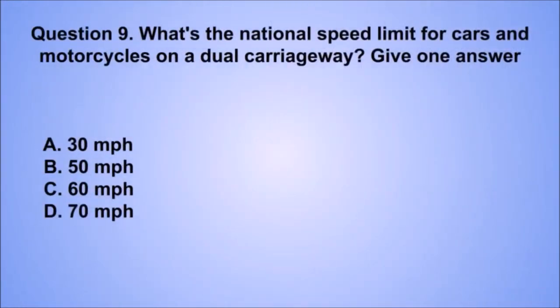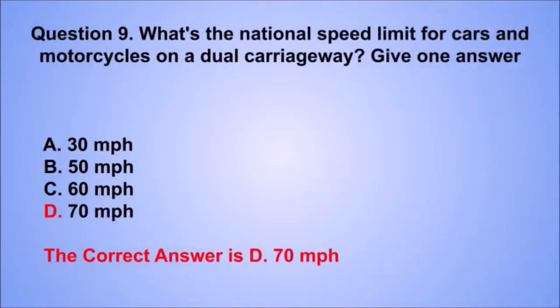Question 9. What's the national speed limit for cars and motorcycles on a dual carriageway? The correct answer is D: 70 miles per hour.